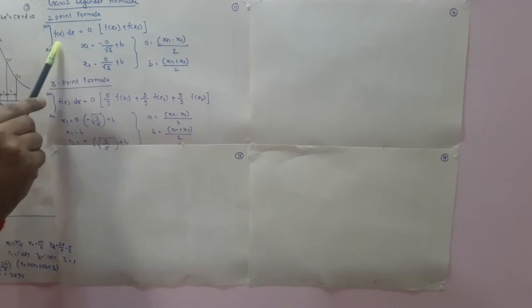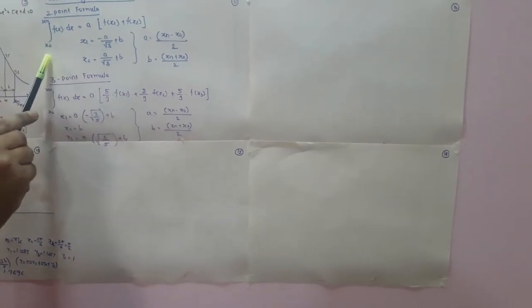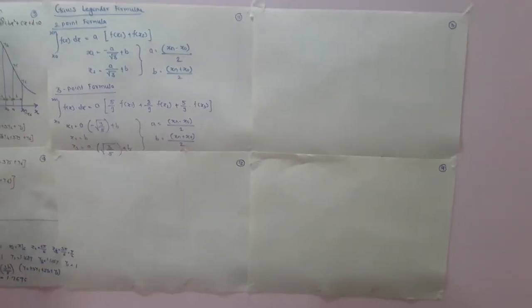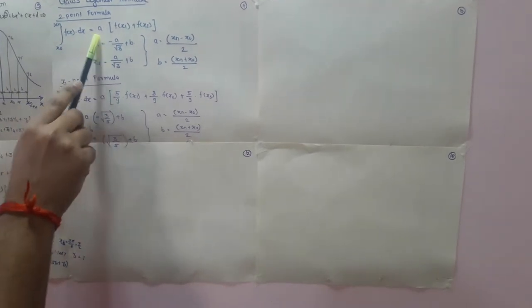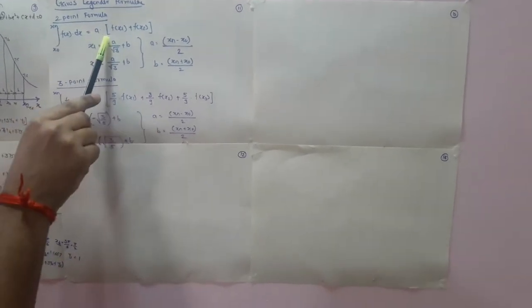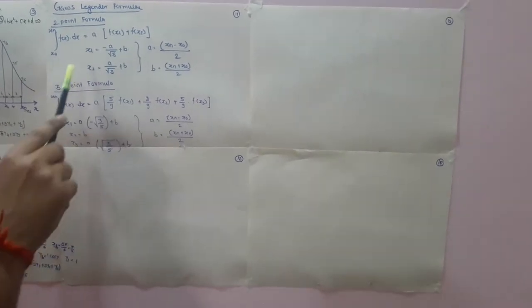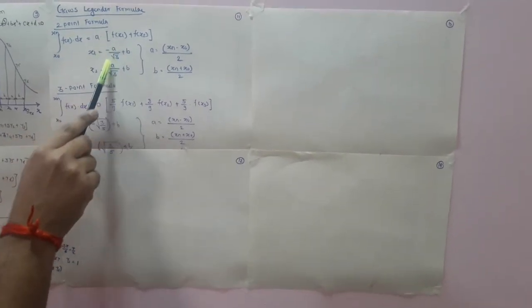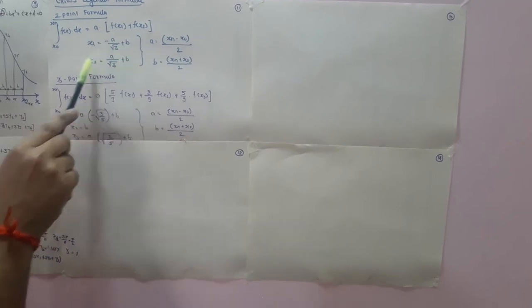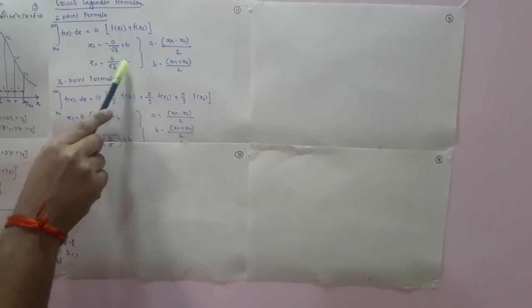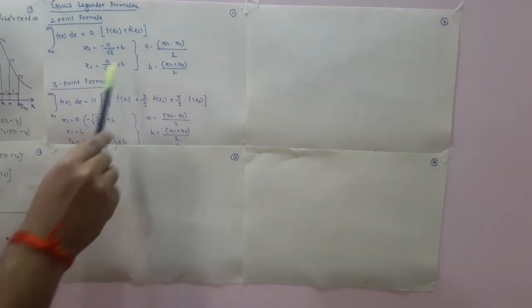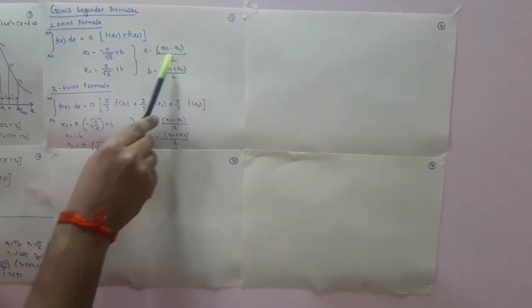Now let us see the formulae. We want to integrate f(x) dx having a limit from x0 to xn. It will be evaluated using the formula: a into f(x1) plus f(x2), where x1 equals minus a divided by root 3 plus b, and x2 equals a divided by root 3 plus b, where a equals (xn minus x0) divided by 2 and b equals (xn plus x0) divided by 2.